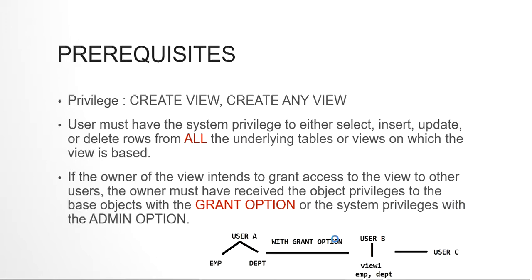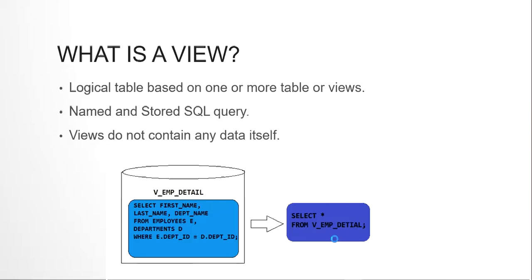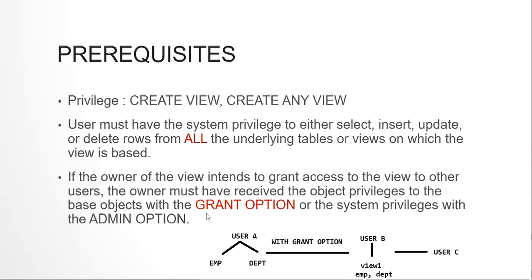To create a view, you need system privileges. To create a view in your own schema you need the CREATE VIEW privilege. To create a view in another user's schema you need CREATE ANY VIEW privilege. You must also have SELECT, INSERT, UPDATE, or DELETE privilege on all the underlying tables used to create the view. For example, if I'm creating a view on the employees and departments tables, I need SELECT, INSERT, UPDATE, or DELETE rights on both tables.